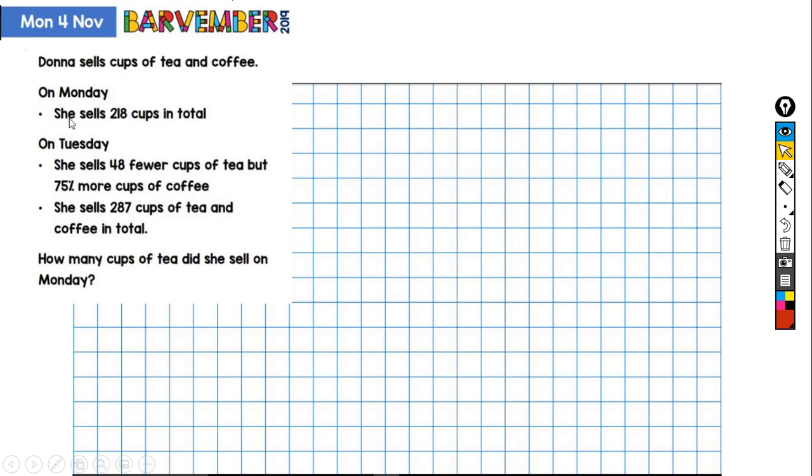So for both days we're given a total, but we're given a little bit more information on Tuesday. Now, ultimately we're comparing. We've got Monday and we've got Tuesday, so I'm going to draw bars to represent Monday and Tuesday and compare them. Let's get going.